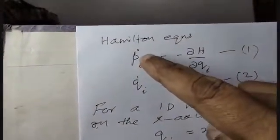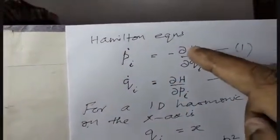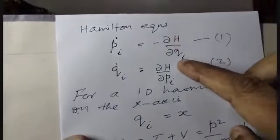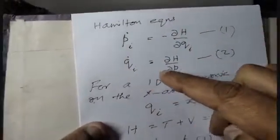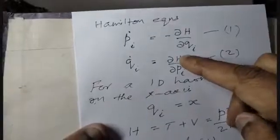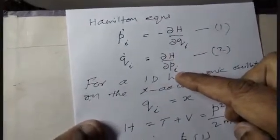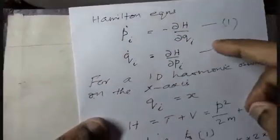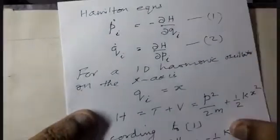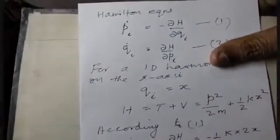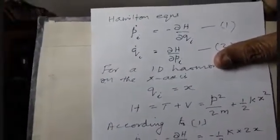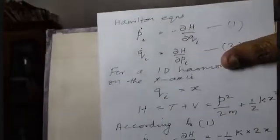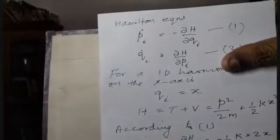Pi dot equals minus ∂H/∂qi. qi dot equals ∂H/∂pi. Pi and qi are generalized coordinates. Pi is momentum, qi is position — generalized coordinates.